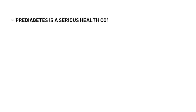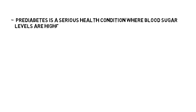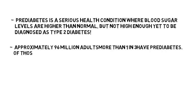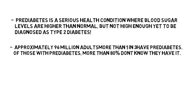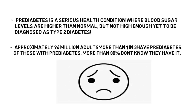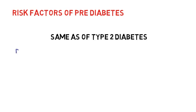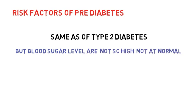Do you know what pre-diabetes is? Pre-diabetes is a serious health condition where blood sugar levels are higher than normal but not high enough yet to be diagnosed as type 2 diabetes. Approximately 96 million adults have pre-diabetes, and shockingly, 80% of them don't know they have it. The risk factors of pre-diabetes are the same as type 2 diabetes, but blood sugar levels are not quite that high, and not quite normal.